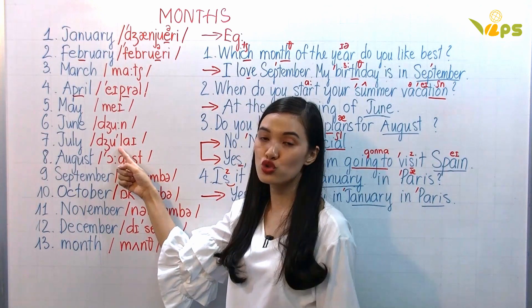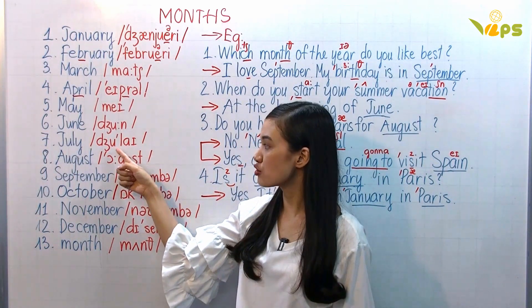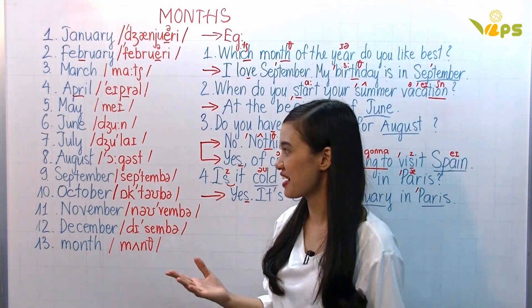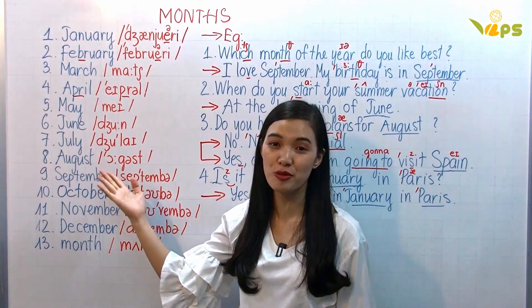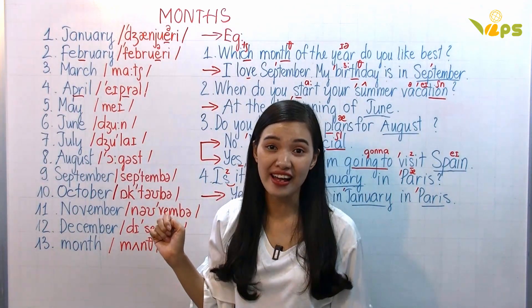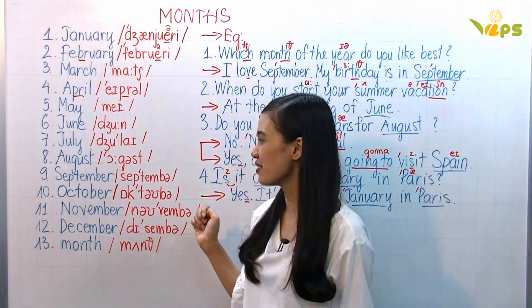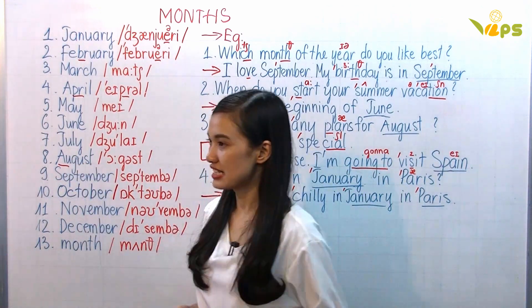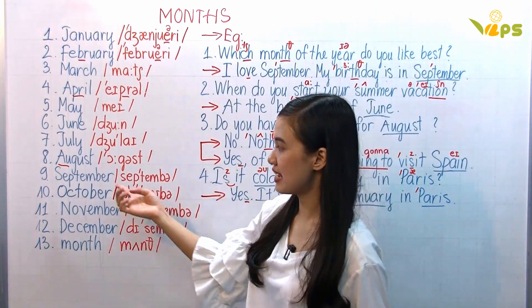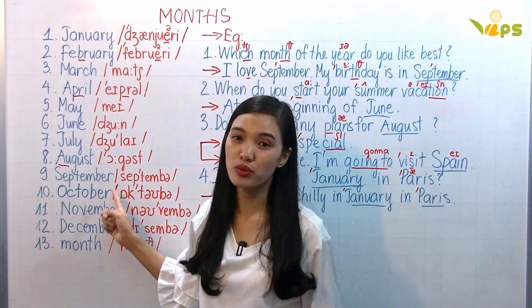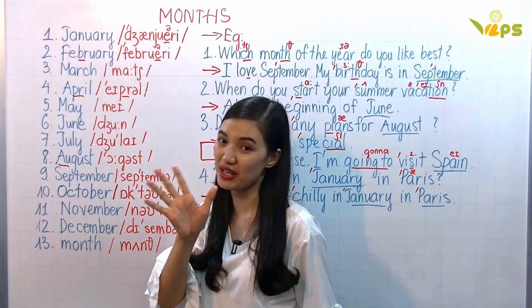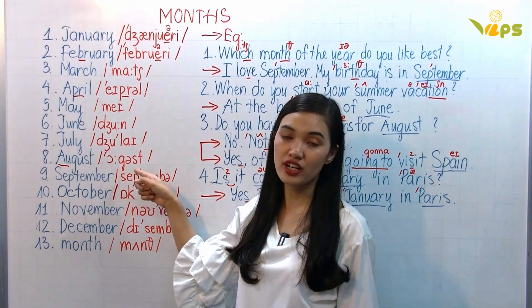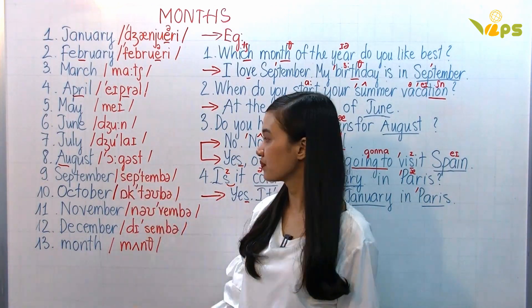This one: July. Some students say 'July' incorrectly. The correct form is July. This one: August — some people say 'August' or 'August' but they're not correct. This is the 'or' vowel, long 'or.' August.